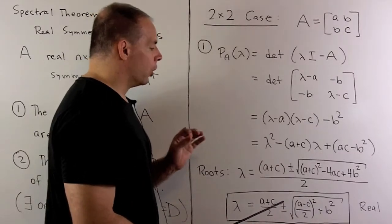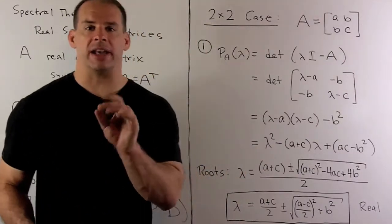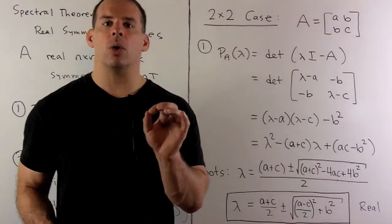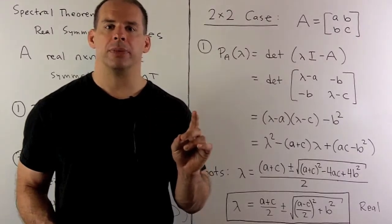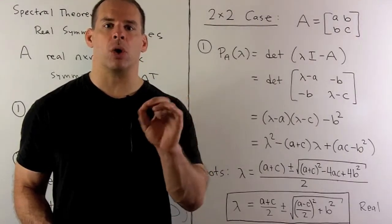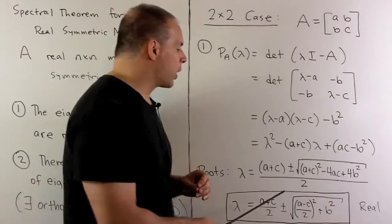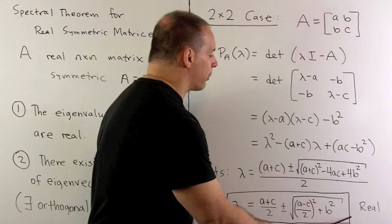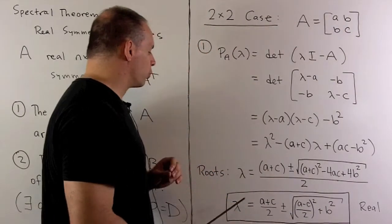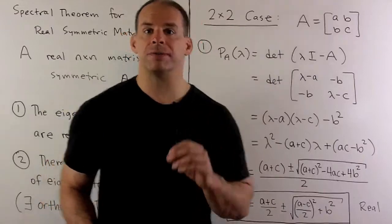Note we're taking the sum of two squares here. If we square any number, we get either 0 or a positive number. So adding two such numbers gives another number that is 0 or positive, meaning the square root is always a legitimate operation. Therefore, the roots are always going to be real. And that's our first conclusion.